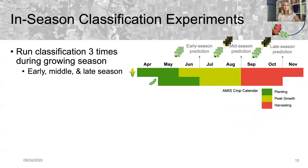This approach enables classifications at three times during the growing season. For the early season prediction, we use only the observations from the green-up stage. For the mid-season prediction, we use the observations from the green-up and the peak growth stages. And for the late season prediction, we use observations from all three stages.